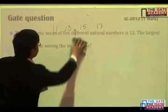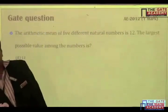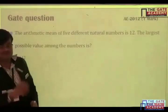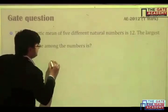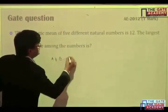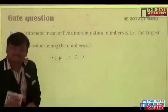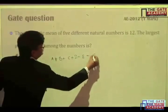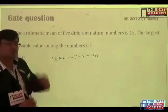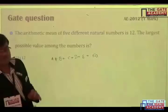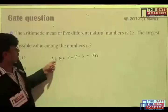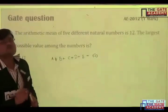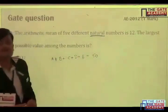So first, let us solve one simple problem. This problem came in 2012 for one mark. First of all, nowhere it is written that this series is in AP. So you cannot apply that logic which we have just learned. So we have to assume 5 different numbers. For example, A, B, C, D, E. If the average is 12, what will be the addition of 5? 12 into 5, that is 60. Now, the question says that the largest possible value among the numbers. So, many people will give logic that we can assume these 4 to be 0 and E will be 60. No, we cannot assume 0. Why? Because in the question it is written natural number.